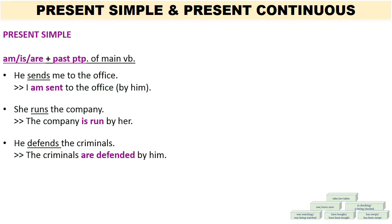Second example: She runs the company. Subject: she. Object: the company. 'Runs' being the present simple verb. Again we switch the object and the subject, so the sentence reads: The company is run by her. Because 'the company' is a singular noun, we use 'is.' 'Run' still remains the past participle of the verb. Third sentence: He defends the criminals. Changing it into the passive voice, the sentence becomes: The criminals are defended by him.